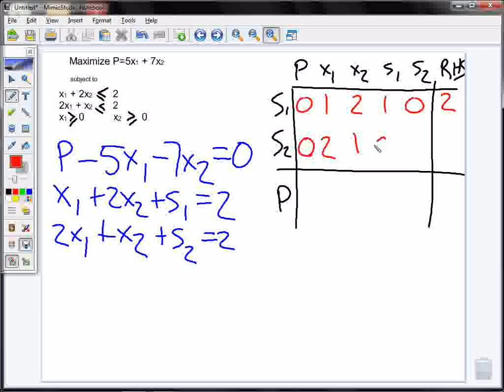There is no s1, so it's 0. I see I have 1s2, so that's 1. And my right hand side is 2.